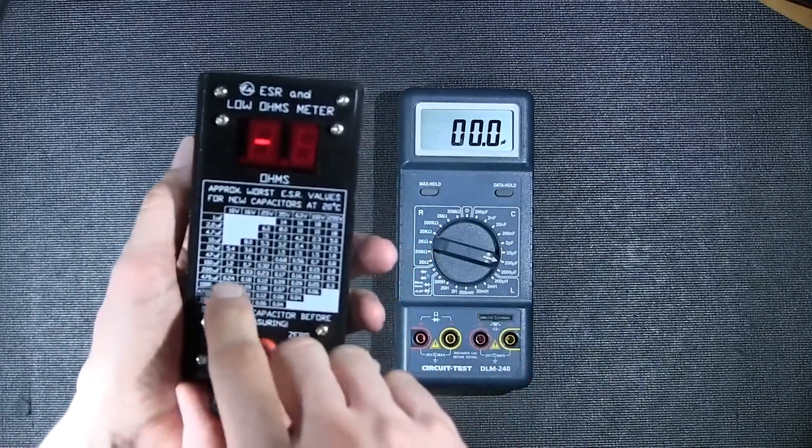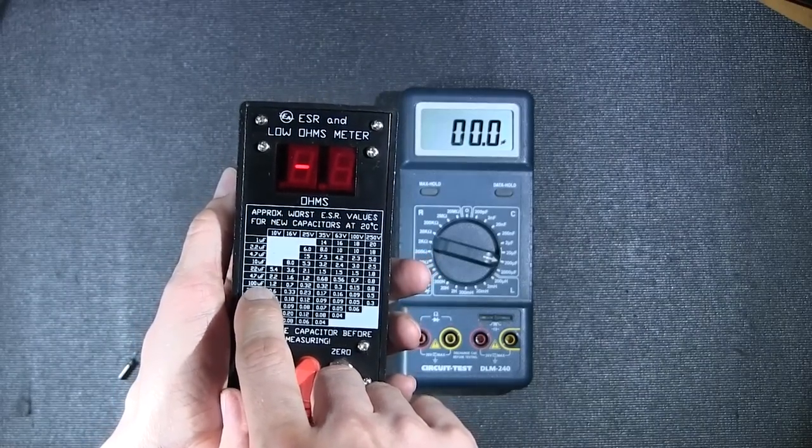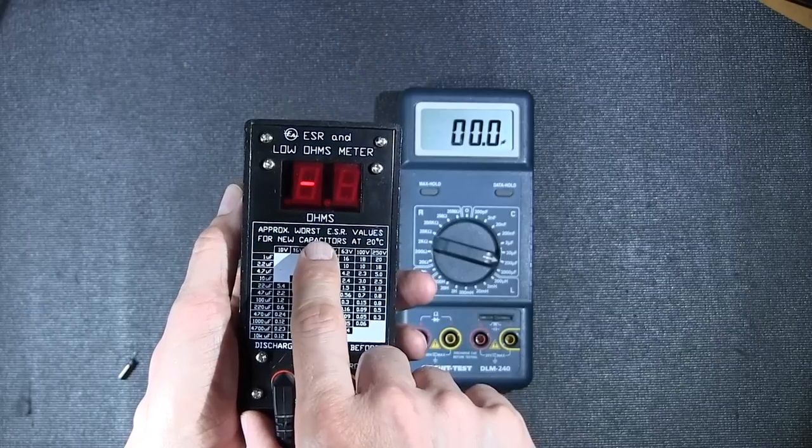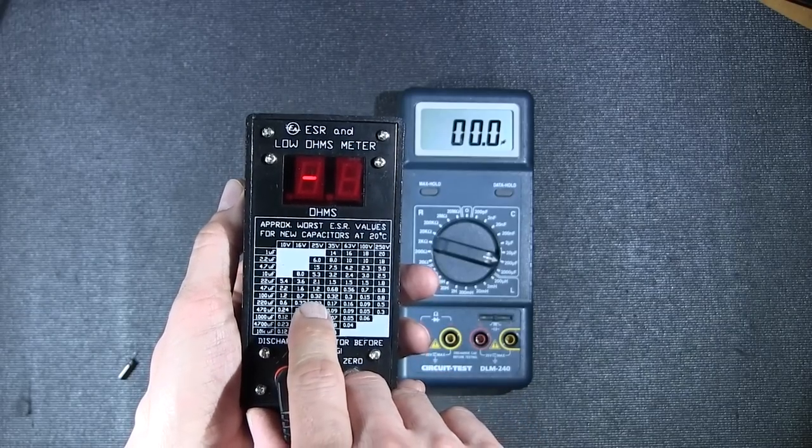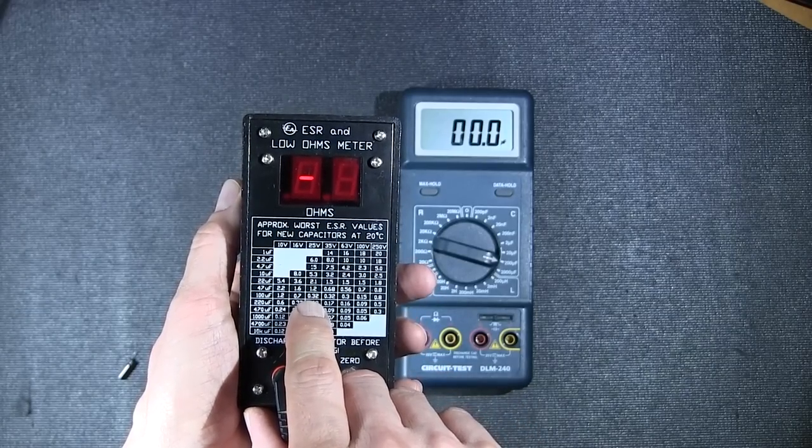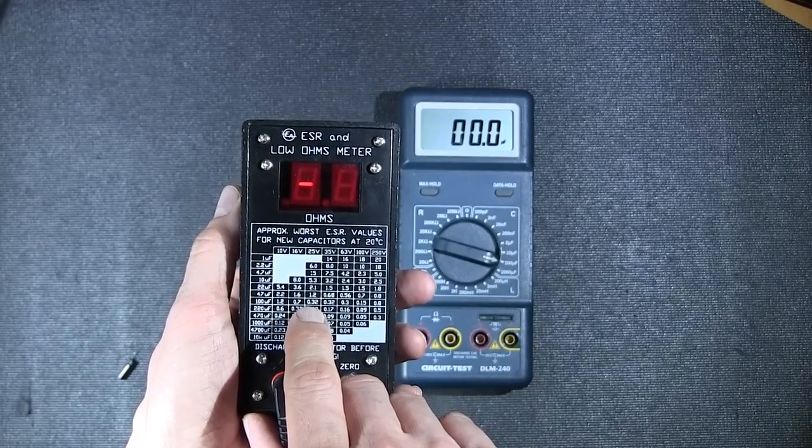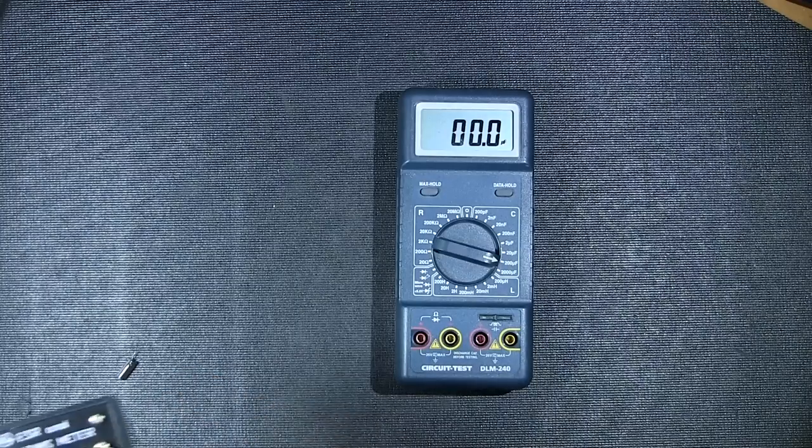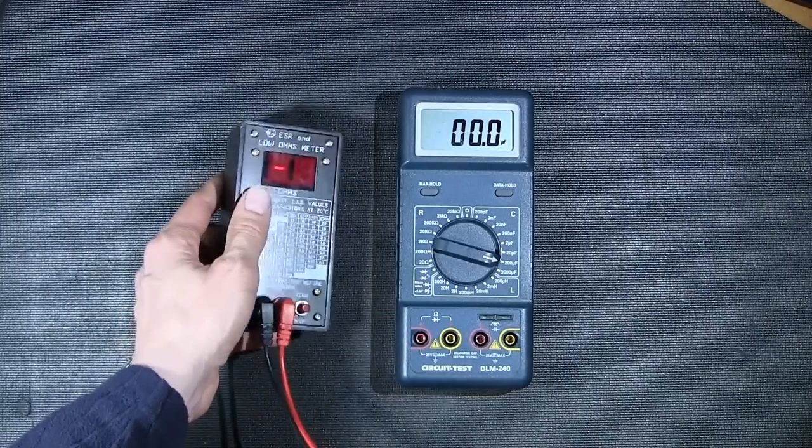If we take a look at the chart here, we can see 100 microfarad at 25 volts. The approximate worst ESR value is 0.32. This capacitor is reading 0.54, which means that this capacitor has excessive ESR and needs to be replaced.